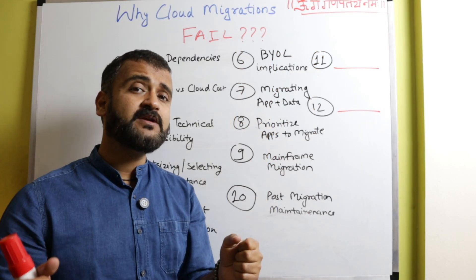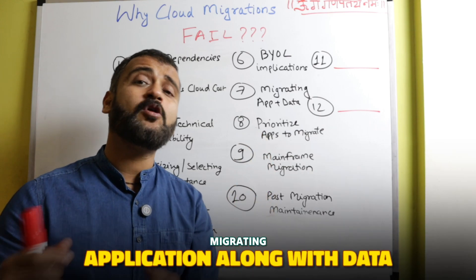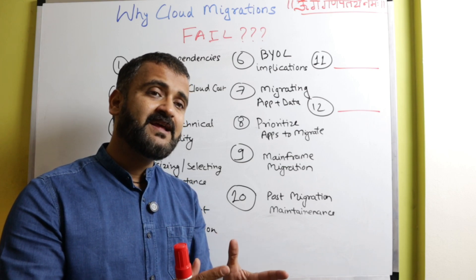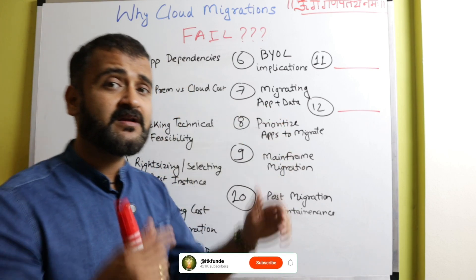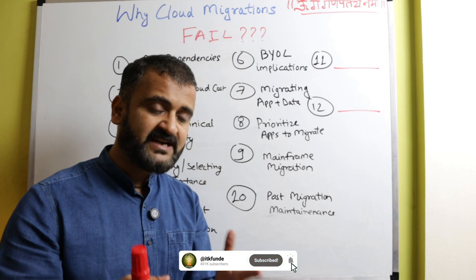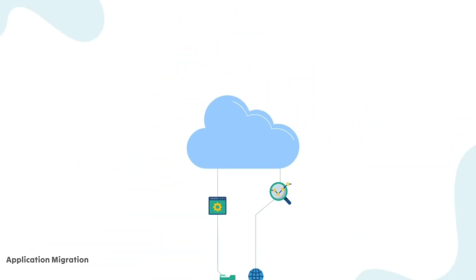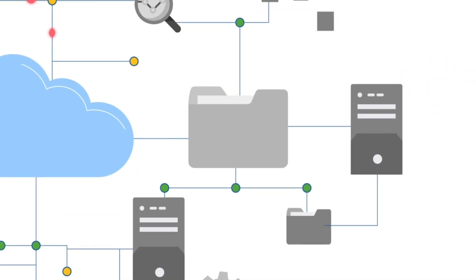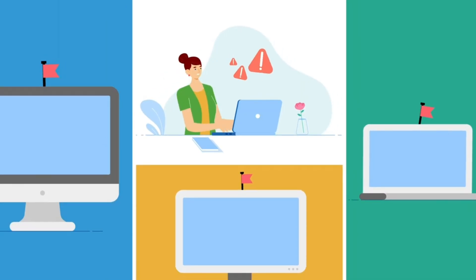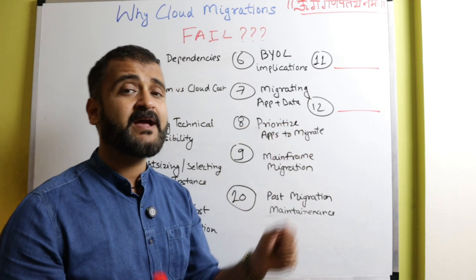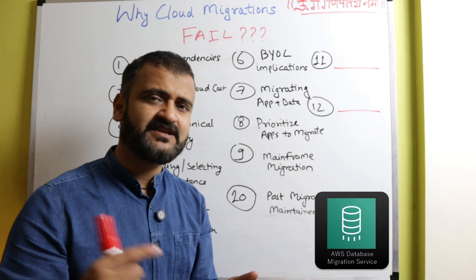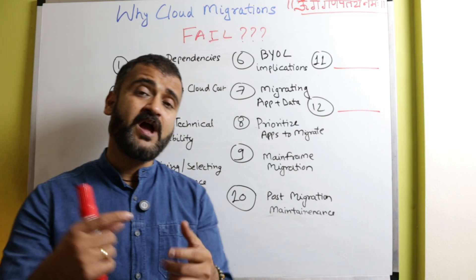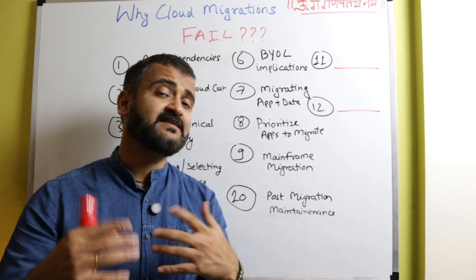The seventh reason is migrating application along with data. You have the code and you've migrated the code, but what about migrating the application along with the data? That is where the rubber hits the road — that is your acid test. A lot of times your application migration will be successful and your database migration will be successful, but when you actually try to connect your application with the data, it will fail. That's why for your database migration, services like DMS — Database Migration Service — and different services from different cloud providers exist. You have to match the application along with data and then migrate.